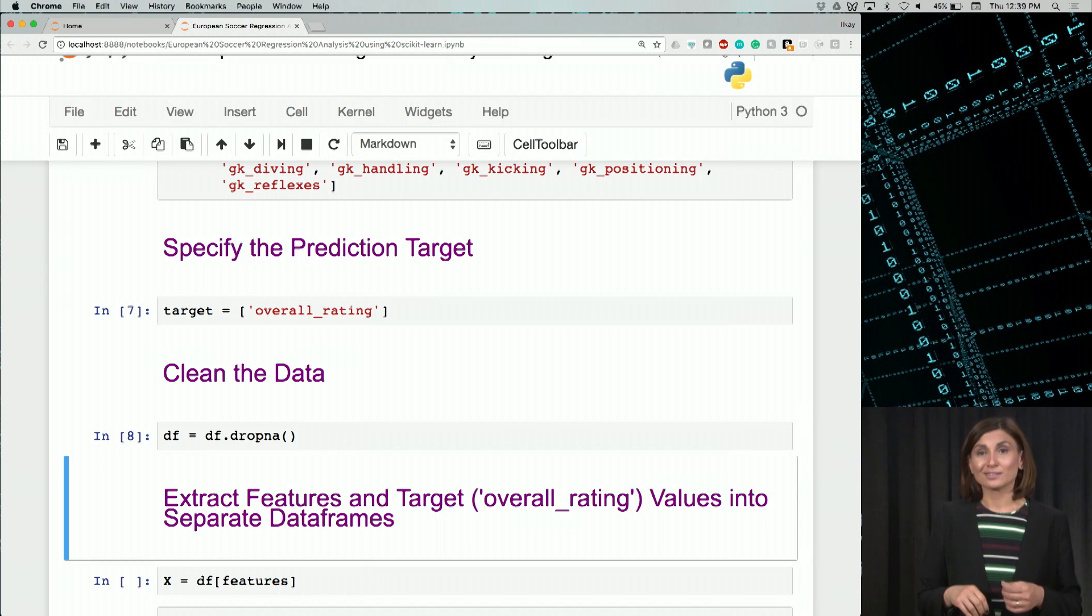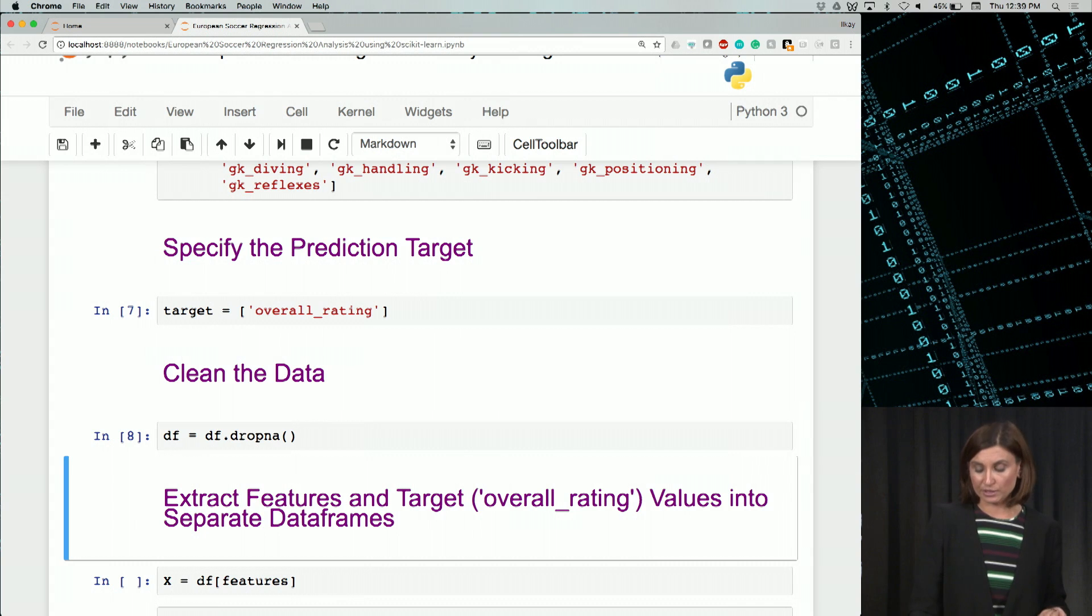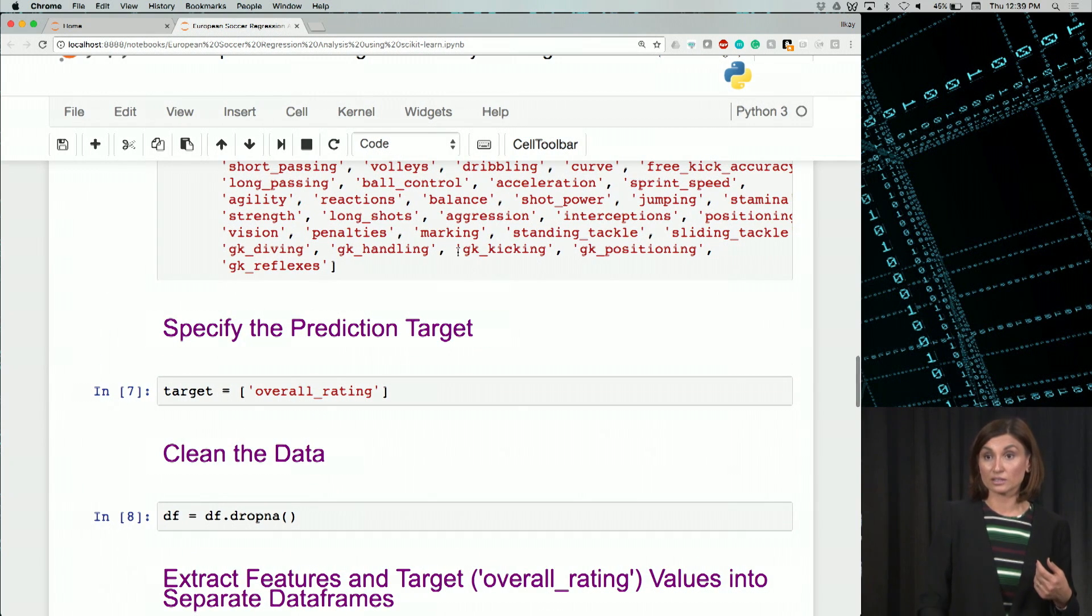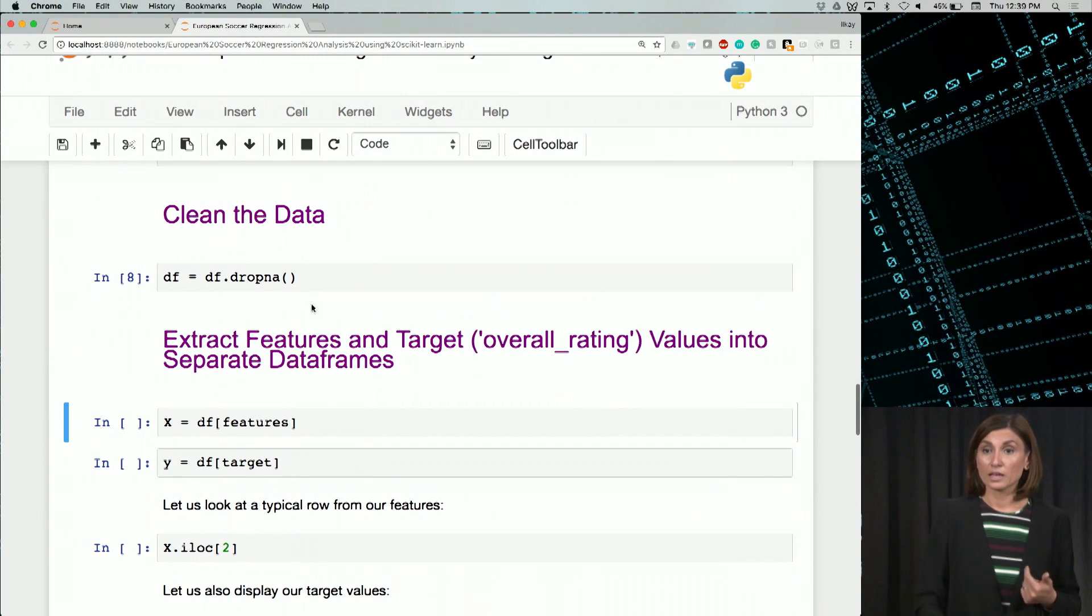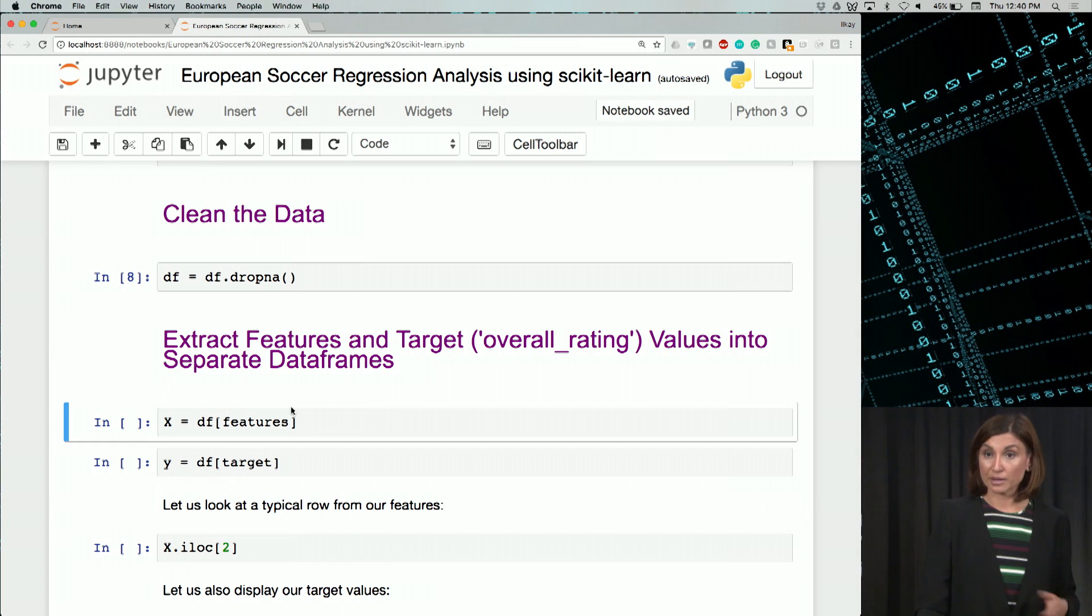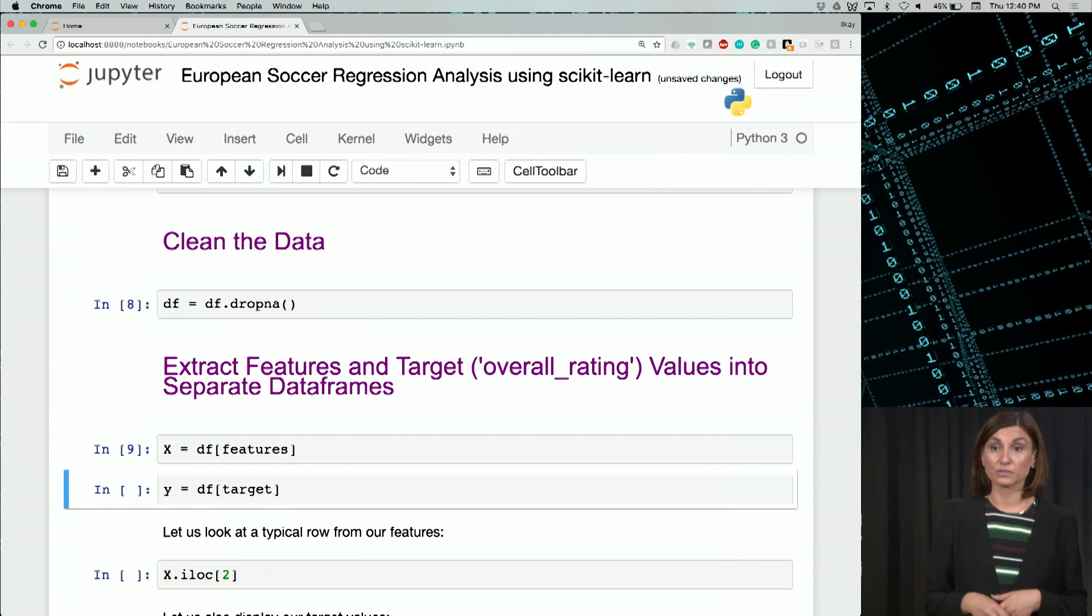Let's now create the two data frames. Like you're used to it now, we need an x, the input, and a y to go with the analogy of y equals f(x) with features and target values. X will be our input data frame. And we'll select the features we declared in our features list.